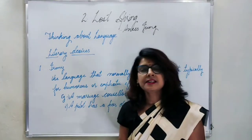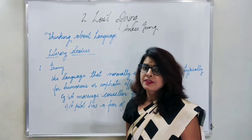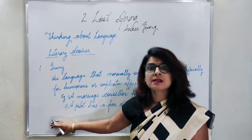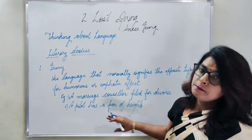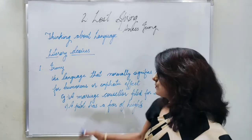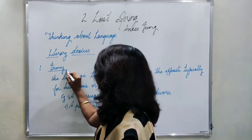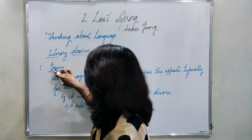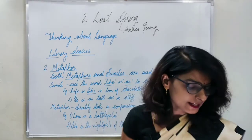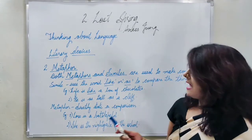Likewise, irony is used in this sentence because the name 'Sahib-e-Alam' signifies the opposite of the poverty-stricken situation of Sahib. So irony is the answer for the first sentence. The second sentence is 'drowned in an air of desolation,' and the literary device used here is metaphor.